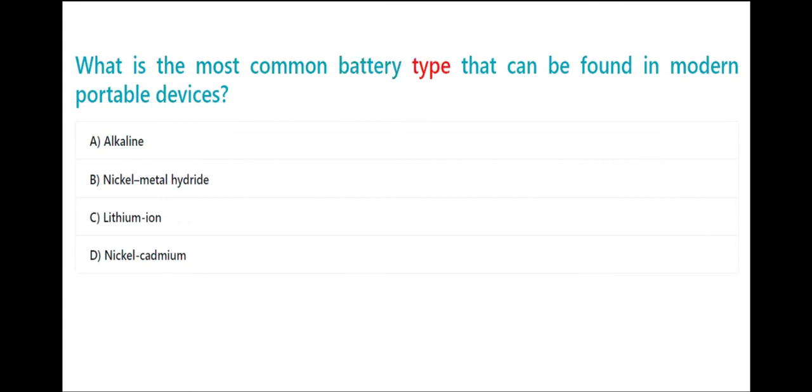What is the most common battery type that can be found in modern portable devices? A. Alkaline B. Nickel Metal hydride C. Lithium ion D. Nickel cadmium. The correct answer is C. Lithium ion.